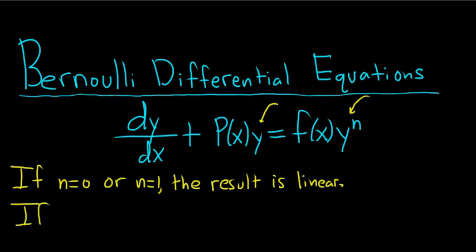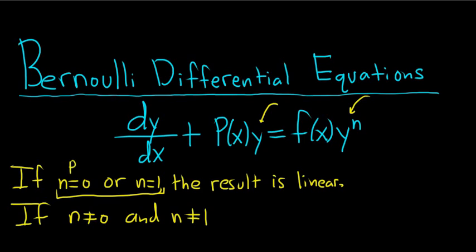If n is not equal to 0 and n is not equal to 1 — you might ask, how did I get here? This is called the negation of the statement. The opposite of n equals 0 or n equals 1 — the negation of that statement is n not equal to 0 and n not equal to 1. It's an important thing in mathematics: this is a p or q statement, and to negate that you do not-p and not-q. So if n is not 0 and n is not equal to 1, then follow these steps.